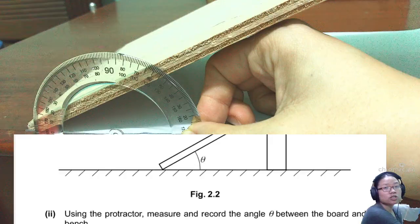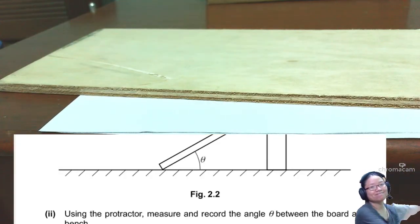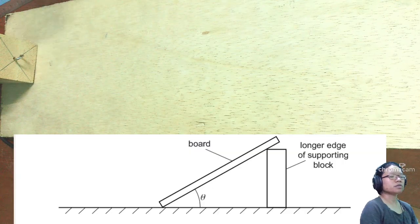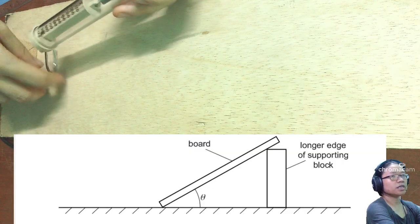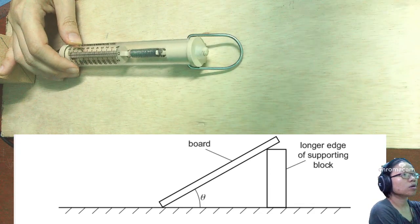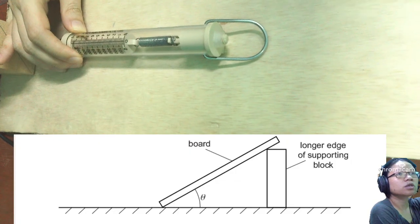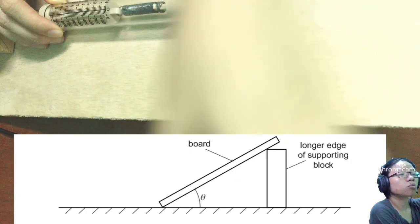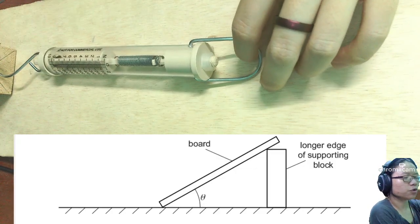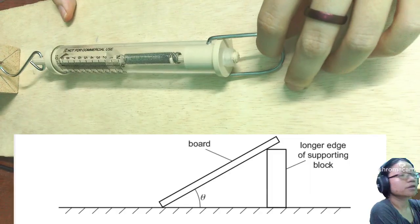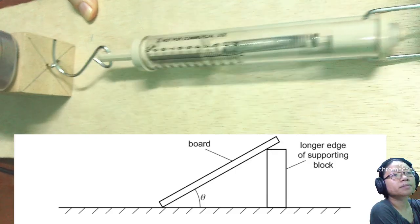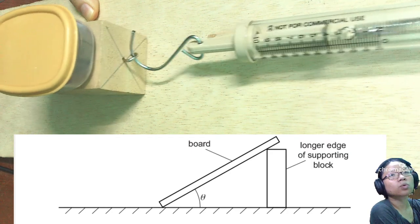And now we will commence the experiment. I will change the camera angle again. The block is here, inclined plane is here. As you can see, it's fairly steep. And I'm now going to hook this thing in. And I will begin to drag. So I will bring the camera closer, hoping that would somewhat help you see the Newton meter. So first try, take the reading when it starts to move.